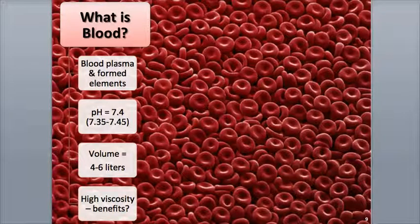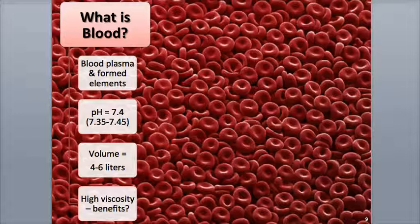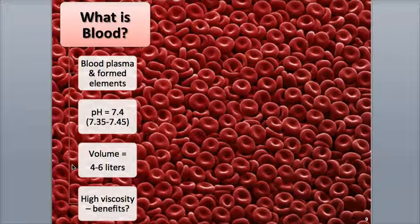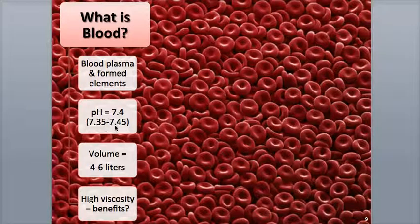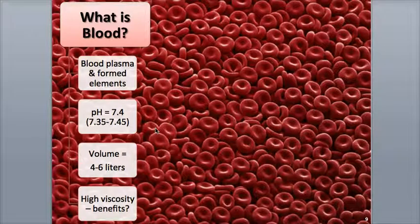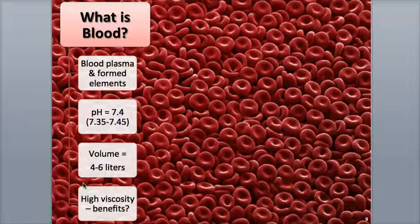Blood makes up about 20% of the body's extracellular fluid and comprises around 8% of the body's total mass. An adult male has a blood volume of 5 to 6 liters, while an adult woman has a slightly lower volume of 4 to 5 liters due to body size differences. Blood has a pH of 7.35 to 7.45, averaging around 7.4, maintained in this narrow range through homeostasis and blood buffer systems. Blood has a bright red color when it is saturated with oxygen but turns dark red when it is unsaturated.